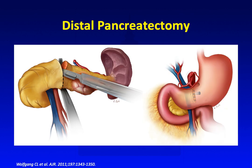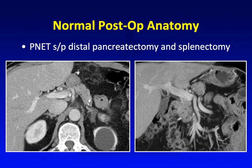This schematic shows the distal pancreatectomy: you cut the pancreas and over-sew the free margin, then perform en-bloc resection of the distal pancreas and the spleen. This is the normal post-op appearance — a clean resection margin at the pancreatic tail, and the spleen is surgically absent.